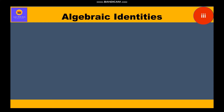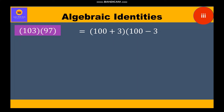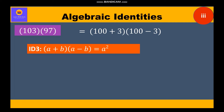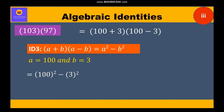Now let's move to the third part: 103 × 97. Now 103 can be written as (100 + 3) and 97 as (100 - 3). This is identity 3: (a + b)(a - b) = a² - b². Here a = 100 and b = 3. Substituting, we get 100² - 3² = 10000 - 9 = 9991. So this is our final answer.